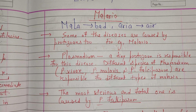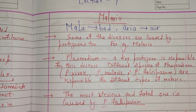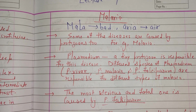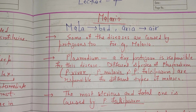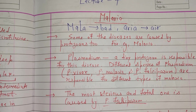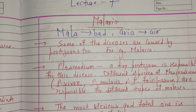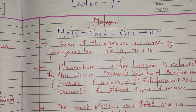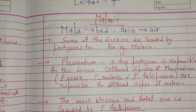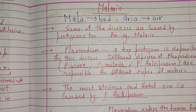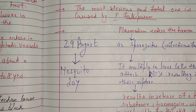Now we will discuss the history of malaria. The name 'malaria' was given in 1872 on the belief that it was caused by the foul air of marshy localities. The word malaria is an Italian word — 'mal' means bad and 'aria' means air. August 29 is celebrated as Mosquito Day, recognizing the relationship between mosquitoes and malaria.